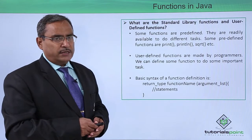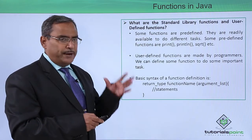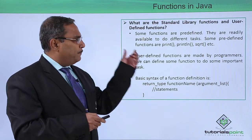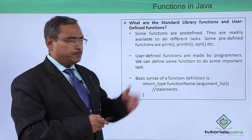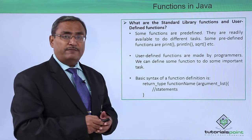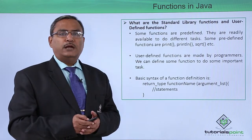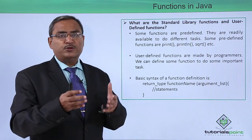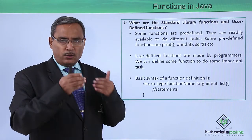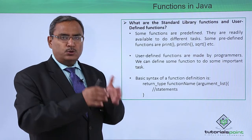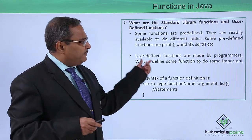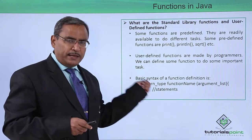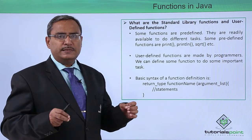Some functions are predefined and readily available to do specific tasks — for example, println, sqrt, etc. These are pre-written functions you can call to get your job done. However, since they are pre-written, you cannot redefine them according to your own needs. User-defined functions address that problem — programmers can define functions to perform specific tasks according to their business logic and requirements.